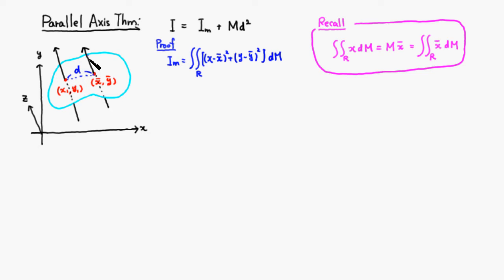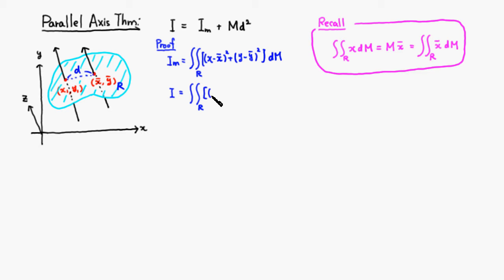The moment of inertia about any point — I'm going to call this (x1, y1) — is going to be a double integral over the same region R of (x minus x1) squared plus (y minus y1) squared, dm. That's just by definition: distance squared times the mass element.